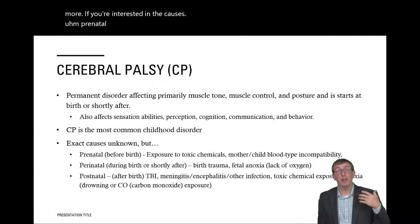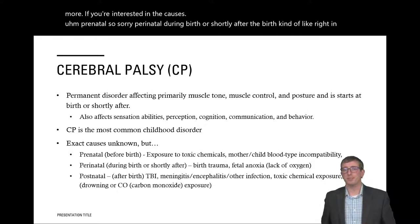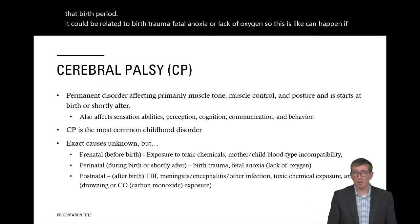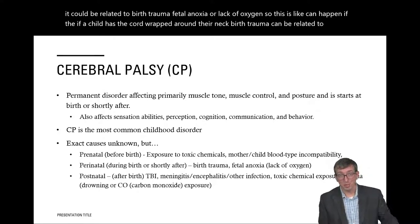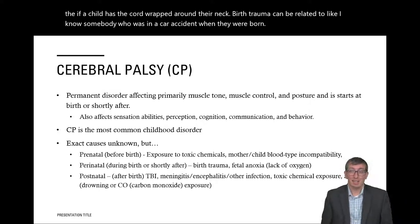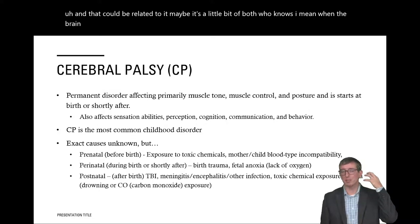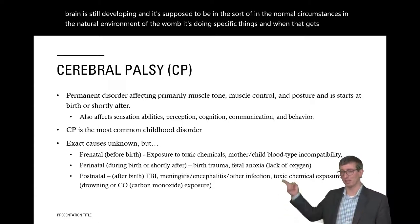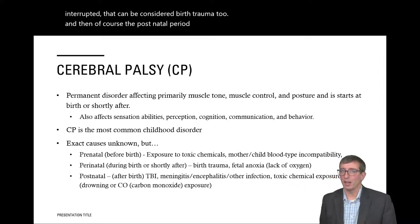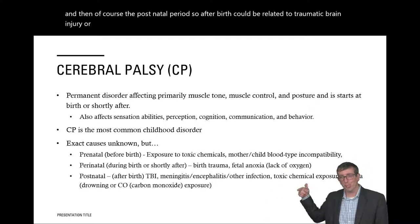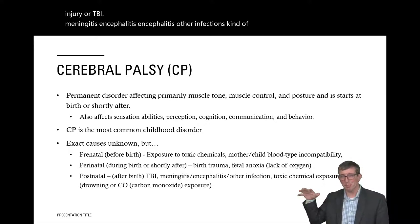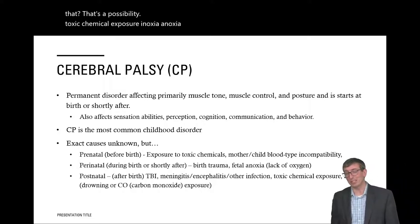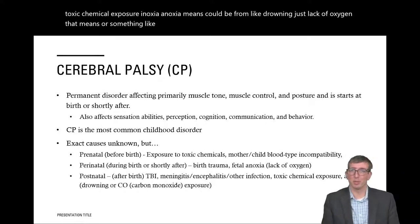Perinatal factors — occurring during or shortly after birth — include birth trauma and fetal anoxia, or lack of oxygen, such as when a cord is wrapped around a neck. Postnatal factors after birth include traumatic brain injury, meningitis, encephalitis, other infections, toxic chemical exposure, and anoxia from things like drowning or carbon monoxide exposure. These different periods help us understand when disruptions to normal brain development may have occurred.